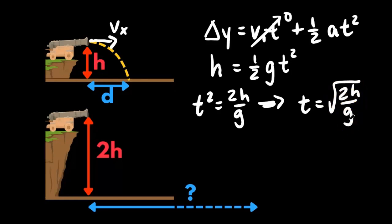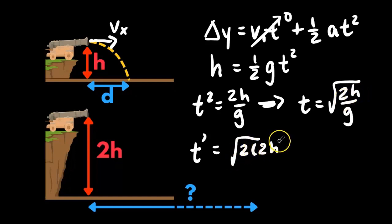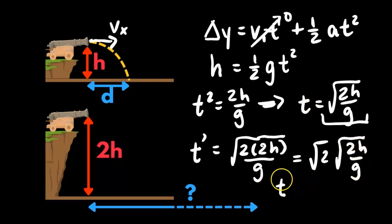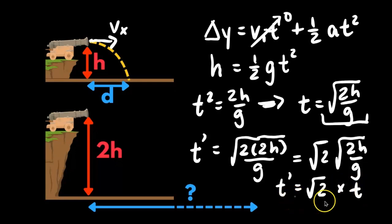Now we want to find the time it takes to hit the ground if we double the height of the cannon. We'll call this new time t prime. We substitute 2H for H, giving t prime equals the square root of 2 times 2H over g. Factoring out the square root of 2, we get square root of 2 times the square root of 2H over g — which is just our original t. So the new time is square root of 2 times t, or about 1.4 times the original time.